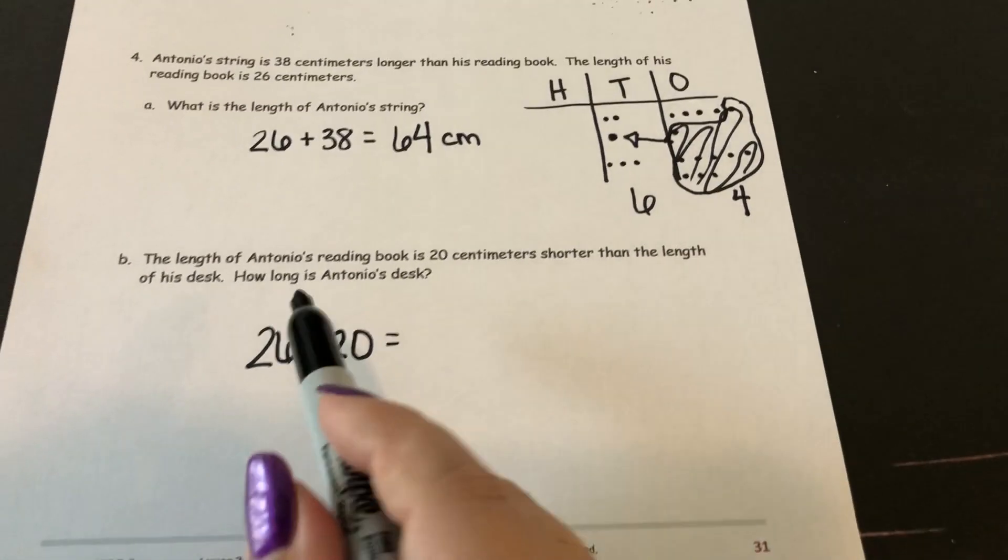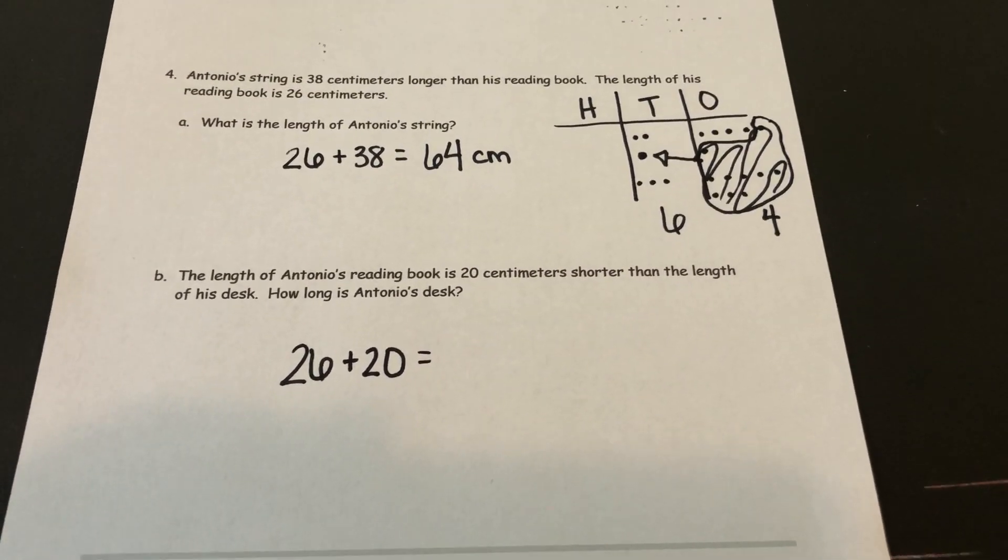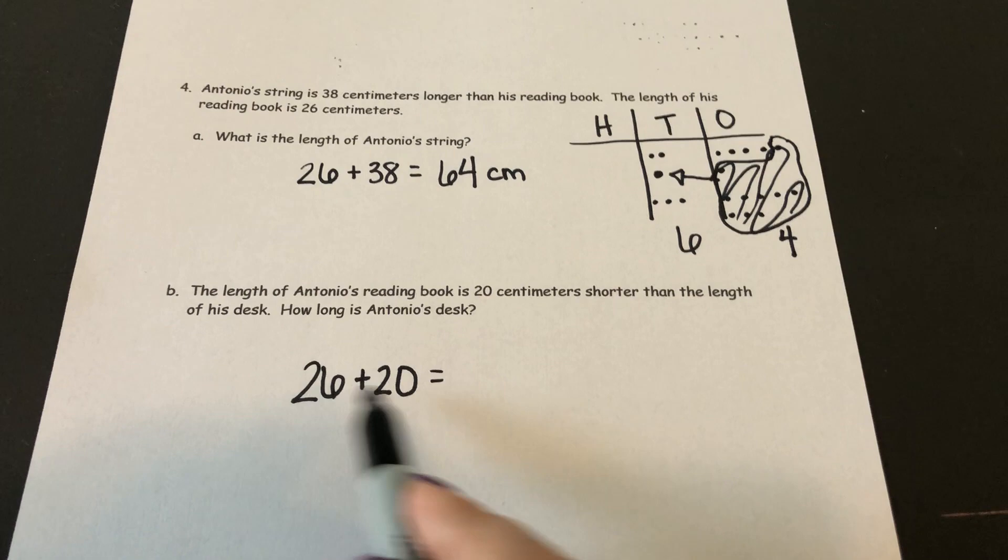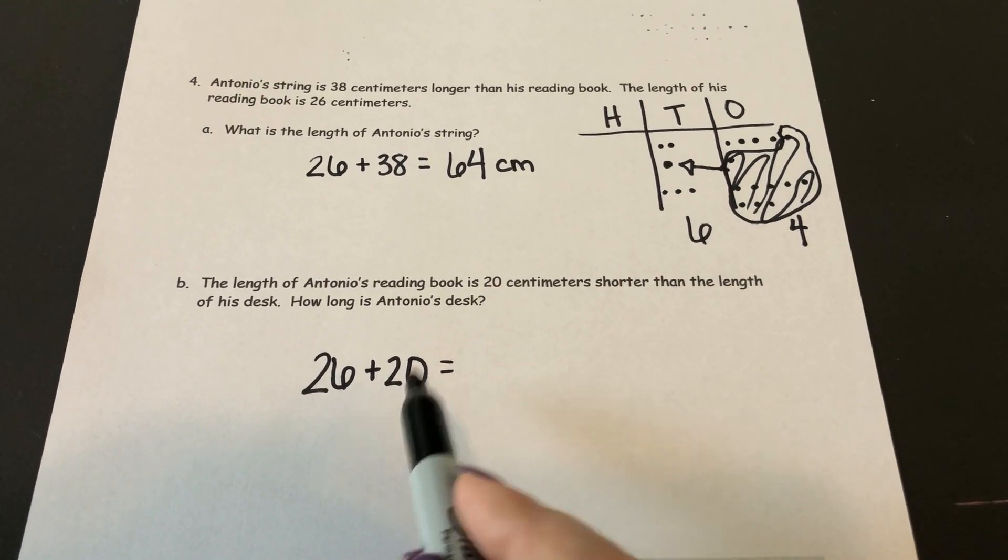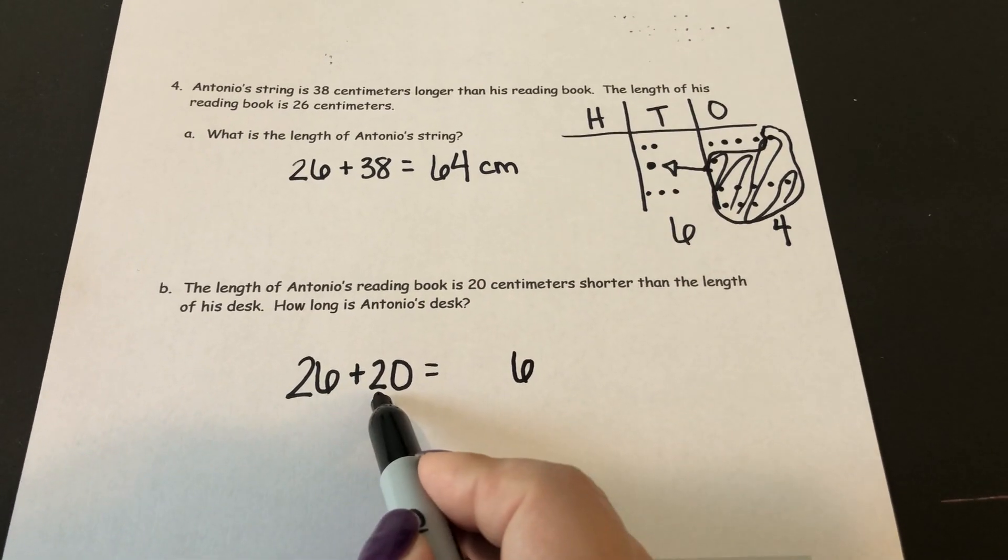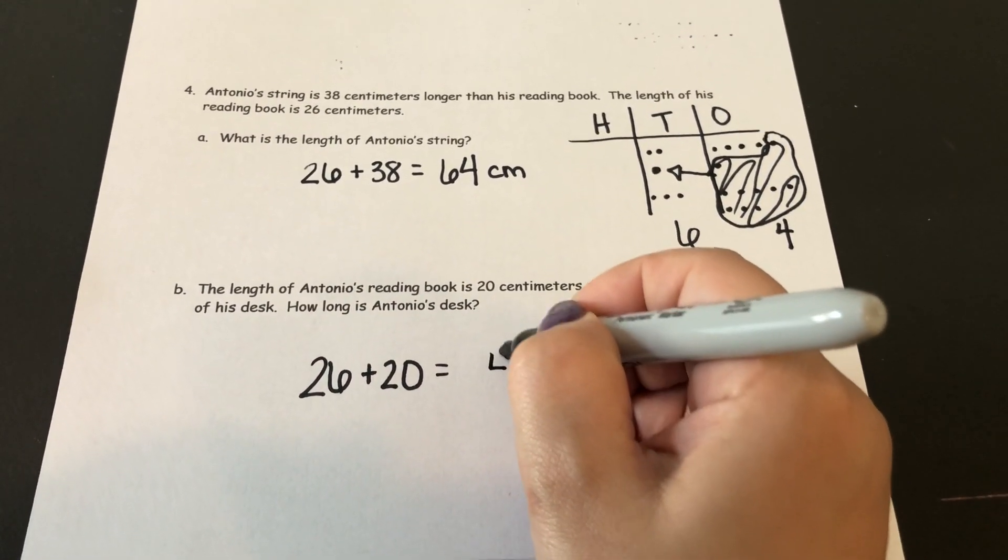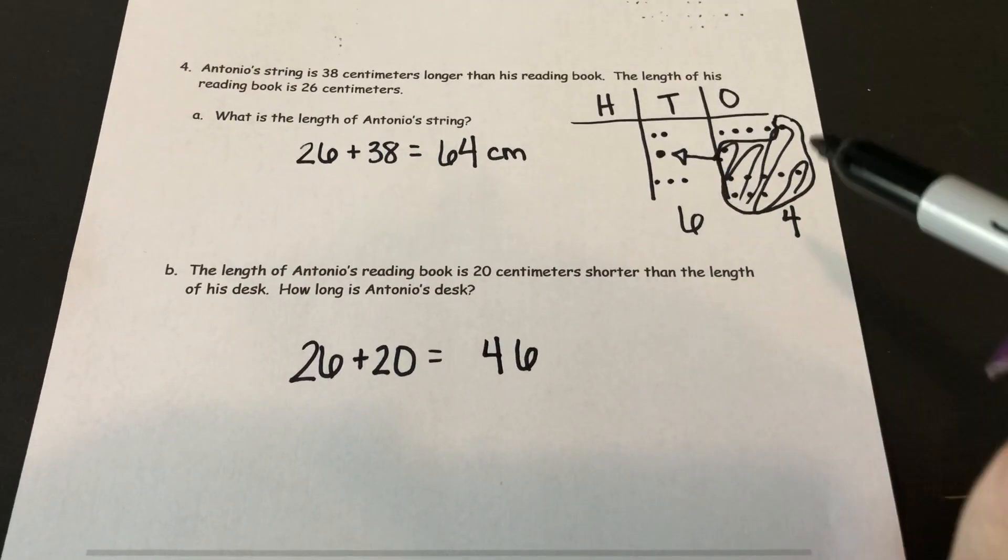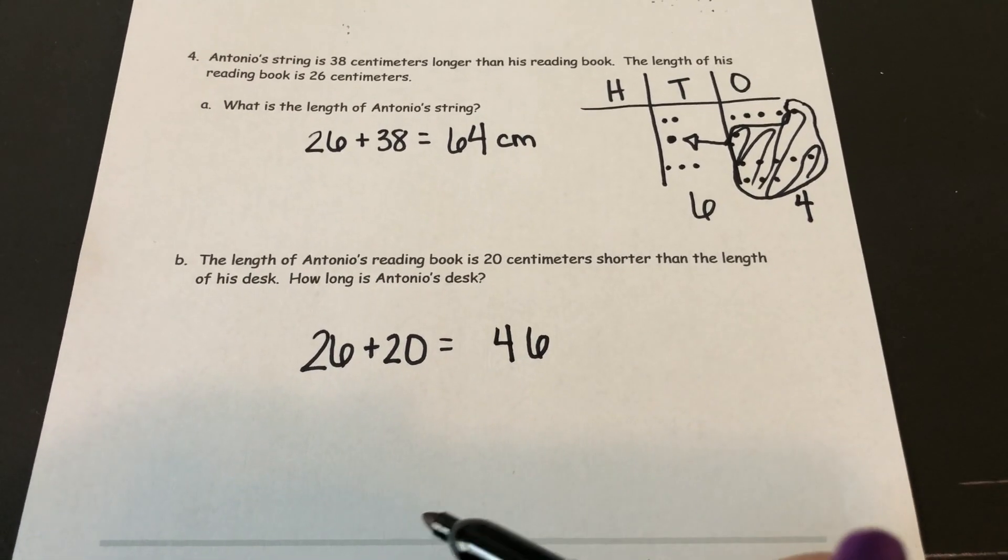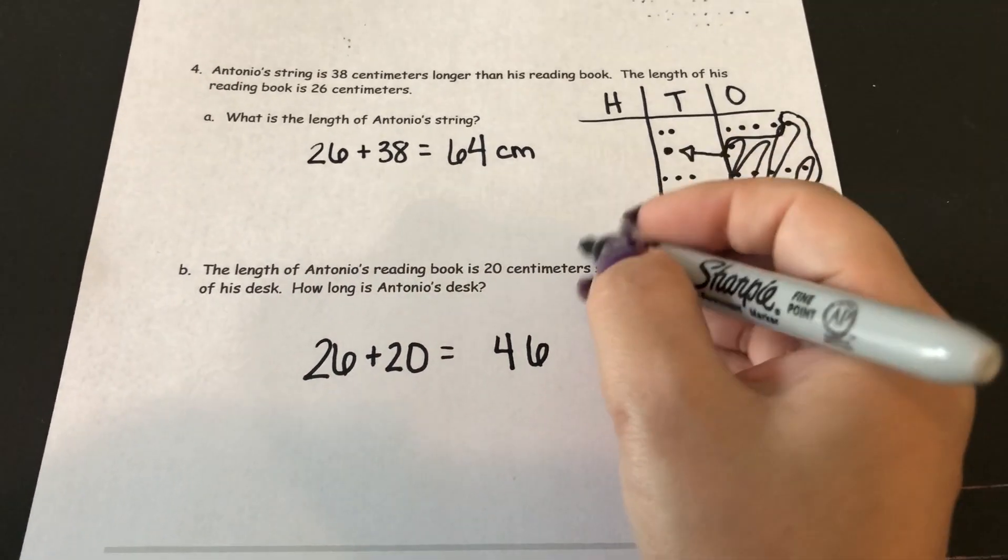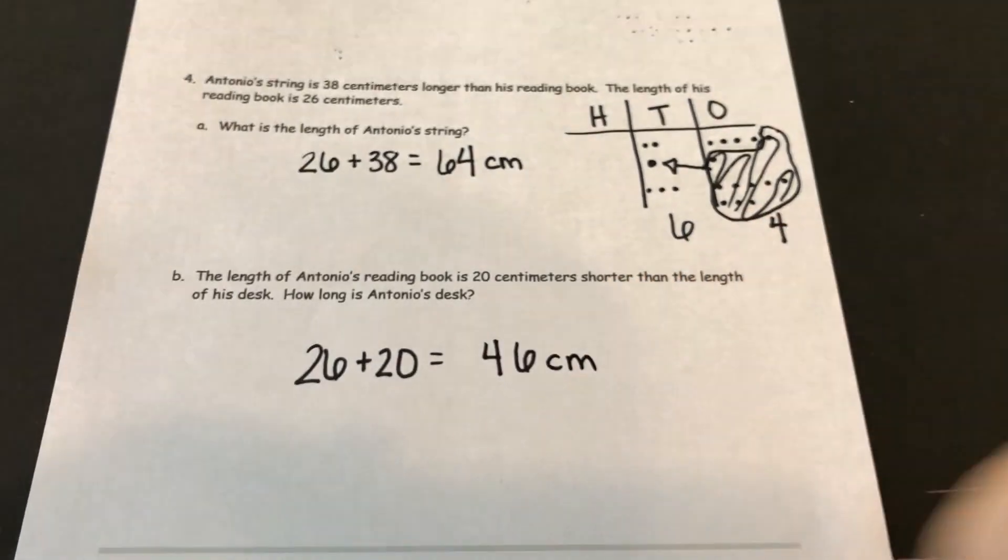My first try is I want to see if I can add like units. I have 6 ones plus 0 ones. Awesome, that is 6 ones. I have 2 tens and 2 tens, that is 4 tens. So for this one, I didn't need to use a strategy because adding like units works. So Antonio's desk was 46 centimeters long.